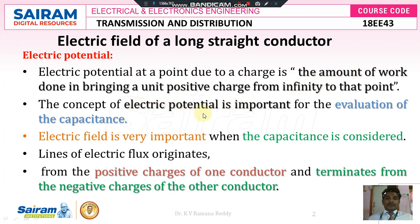The concept of electric potential is important for the evaluation of capacitance. Capacitance is equal to Q by V, that is the amount of charge per unit voltage is called capacitance. So that charge has to be done, and for that we have to do some amount of work. When that unit positive charge is moving from infinity to that point, the electric field is very important when capacitance is considered, because C is equal to Q by V.